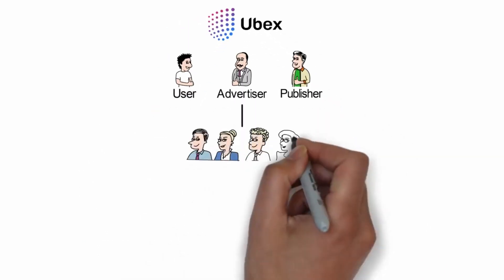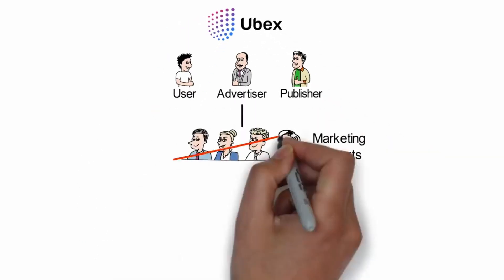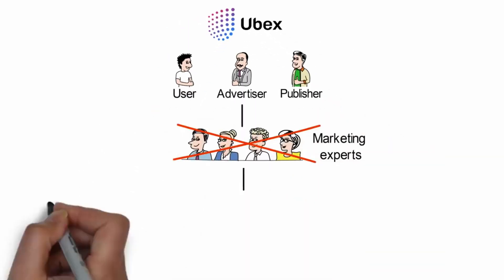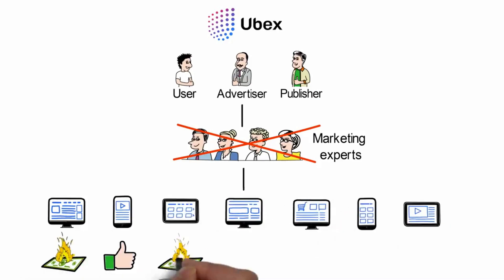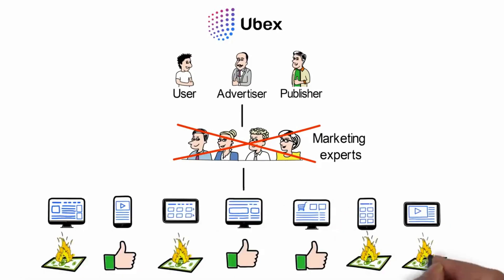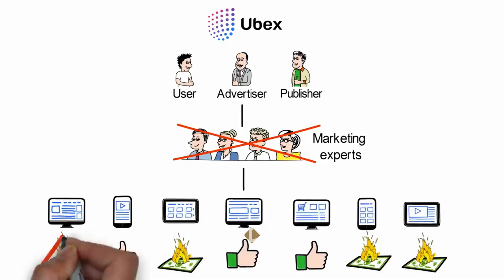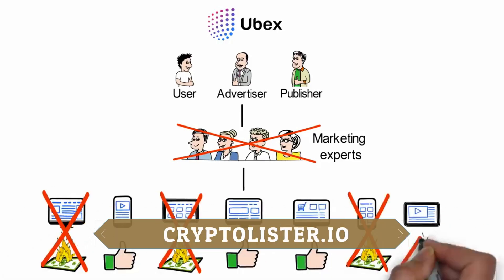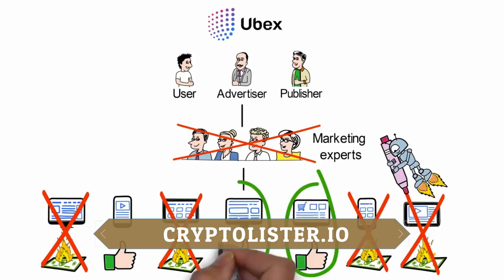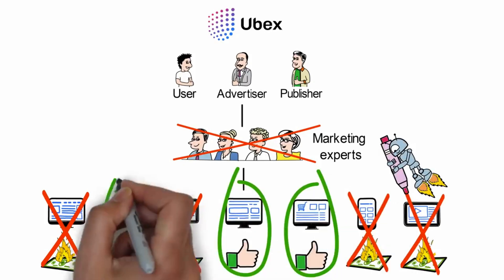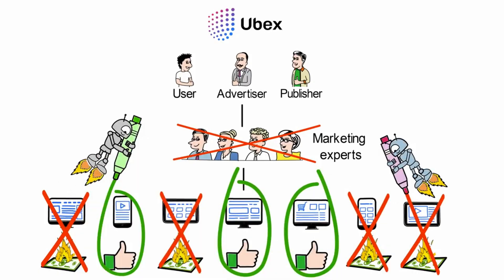Advertisers no longer need to hire marketing experts or waste money on testing different advertising channels, which may prove to be ineffective. Neural networks automatically weed them out, selecting only the most optimal distribution of ad content among suitable websites.